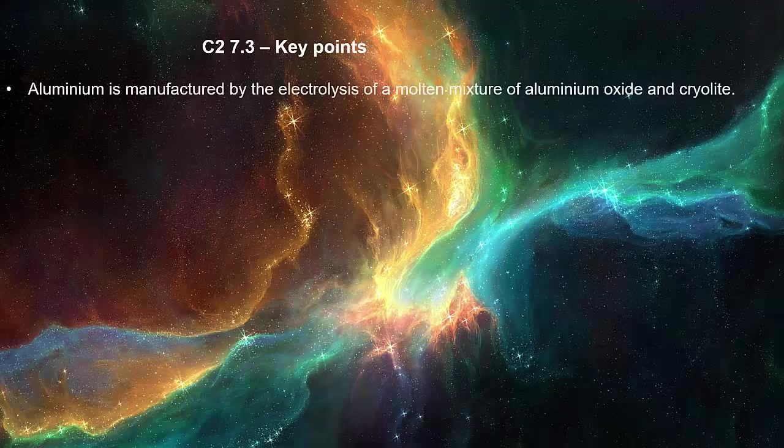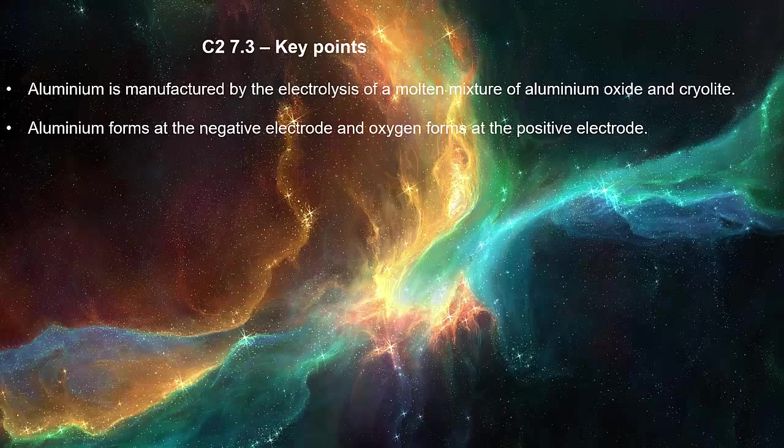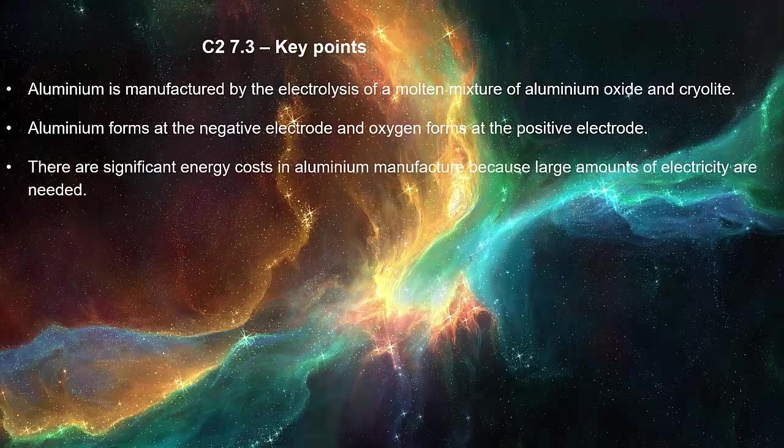Aluminum is manufactured by the electrolysis of a molten mixture of aluminum oxide and cryolite. Aluminum forms at the negative electrode and oxygen forms at the positive electrode. There are significant energy costs in aluminum manufacture because large amounts of electricity are needed.